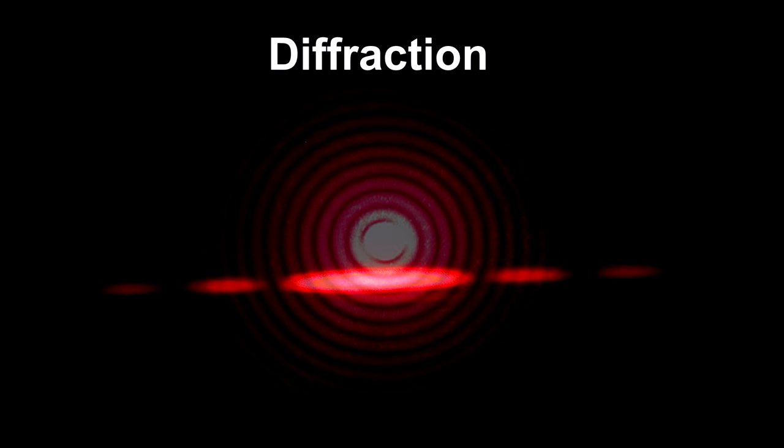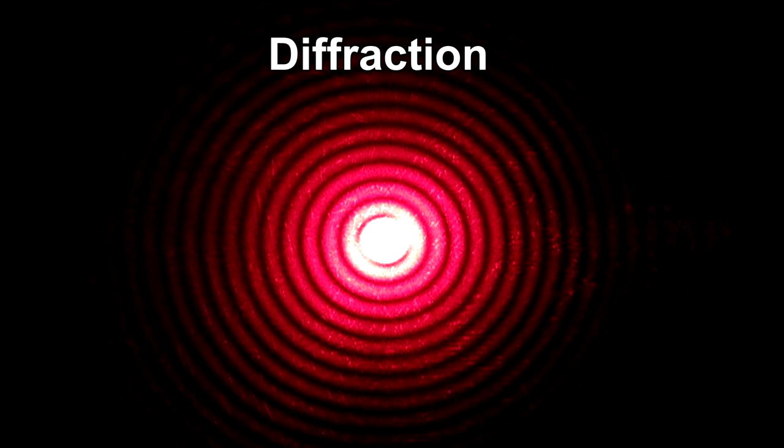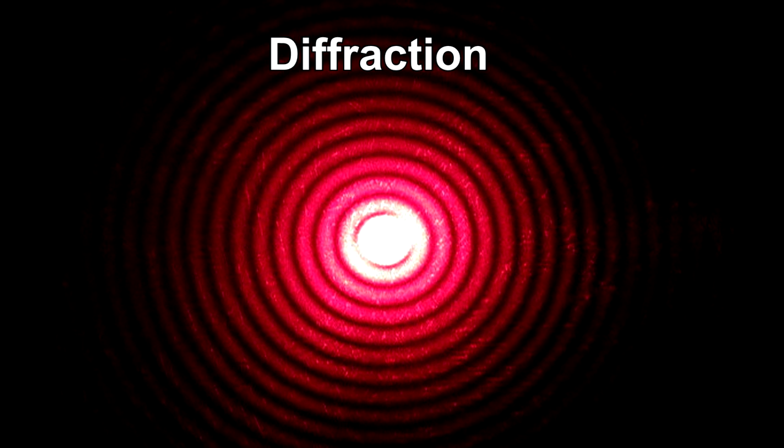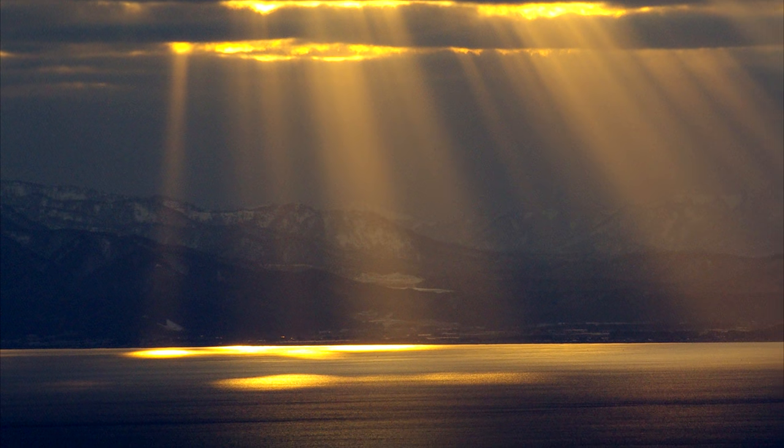Diffraction of light occurs when a light wave passes over a corner or through an opening or slit that is approximately the size of the light's wavelength. We see this in daily life all the time.